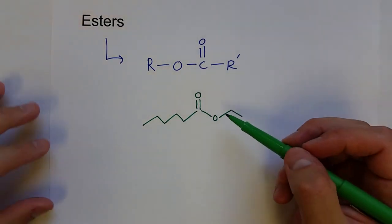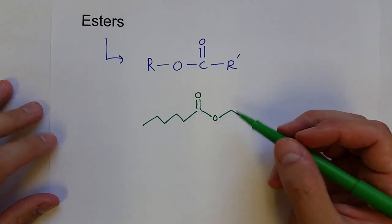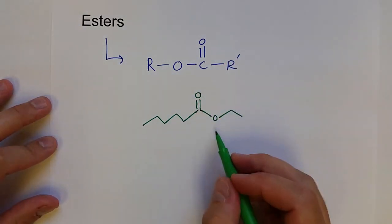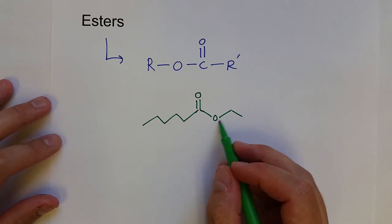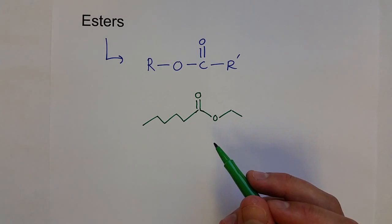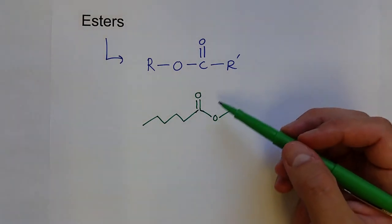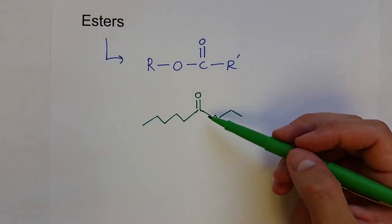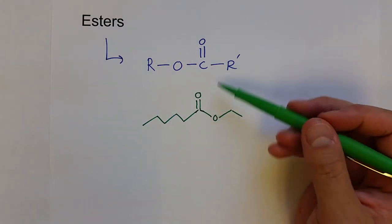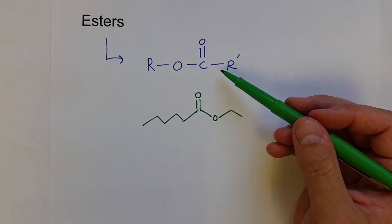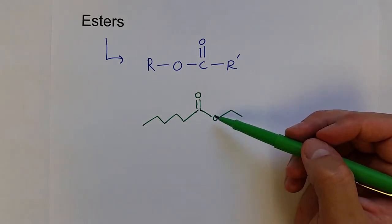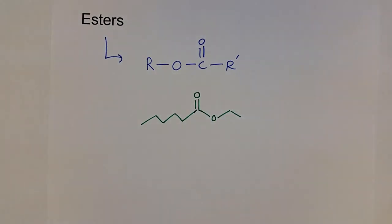If we were to draw them as skeletal formulas, this is how they would look like, where you have a carbon double bonded to an oxygen and then an oxygen in the middle, and then whatever hydrocarbons you have on the side. Esters are actually very common in biological samples including fruits and vegetables, and they often have a very pleasant smell. If you think of the banana smell, that's actually an ester, a molecule that has this functional group.